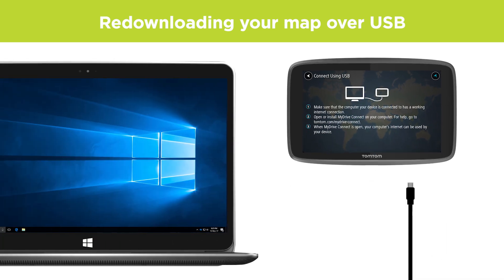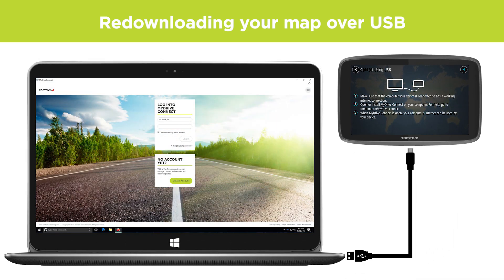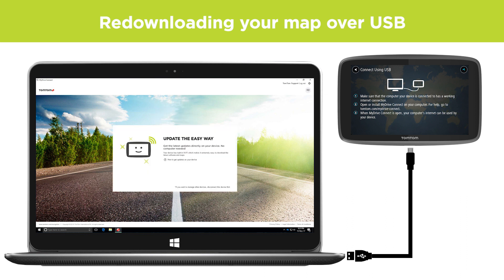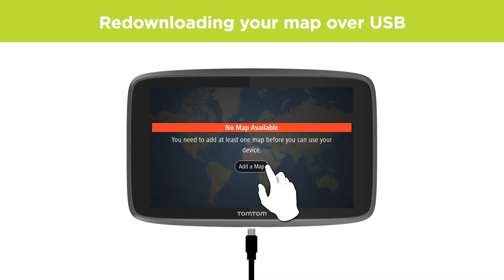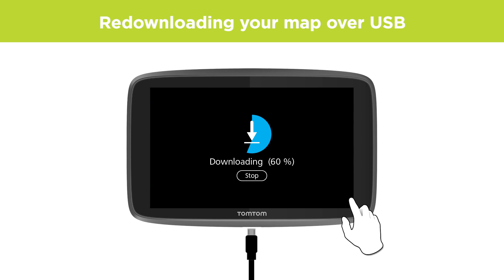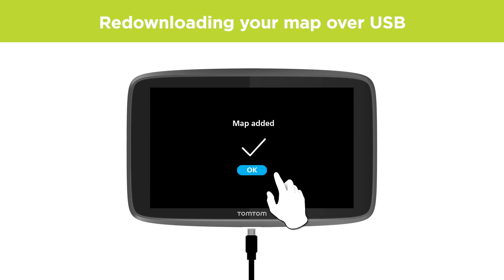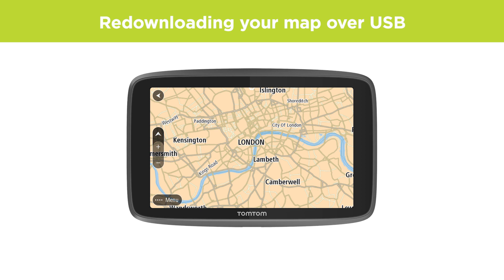Connect your device to the computer. Open MyDrive Connect and log in if prompted. Select 'Add map' on your device if you haven't already done so. Choose your map and select 'Download'. When the download is complete, you see the message 'map added', and when you select 'OK', you can disconnect and start using your device.